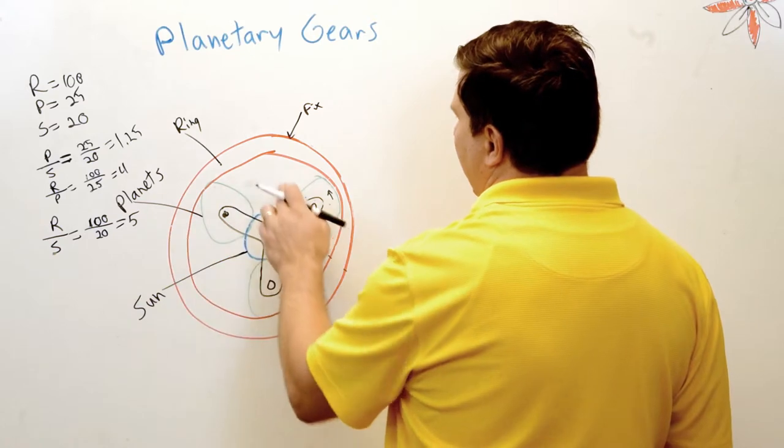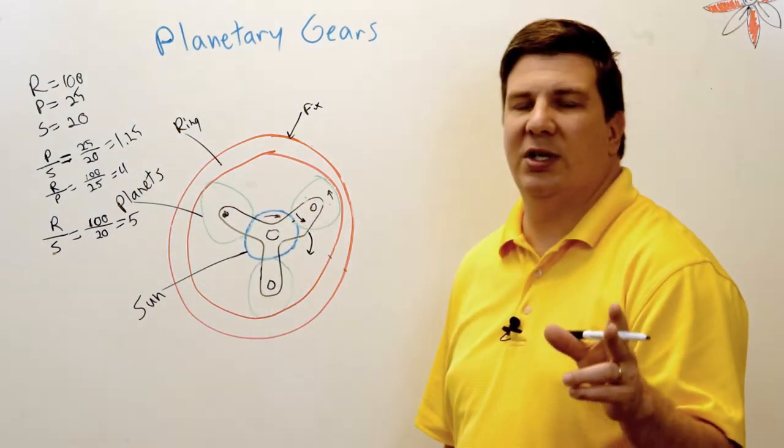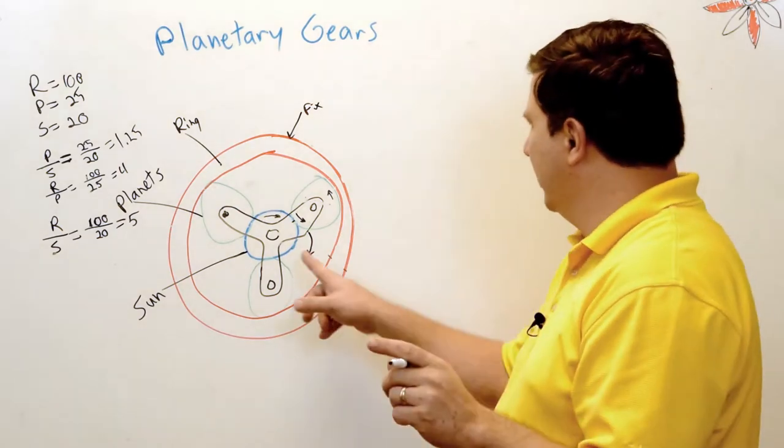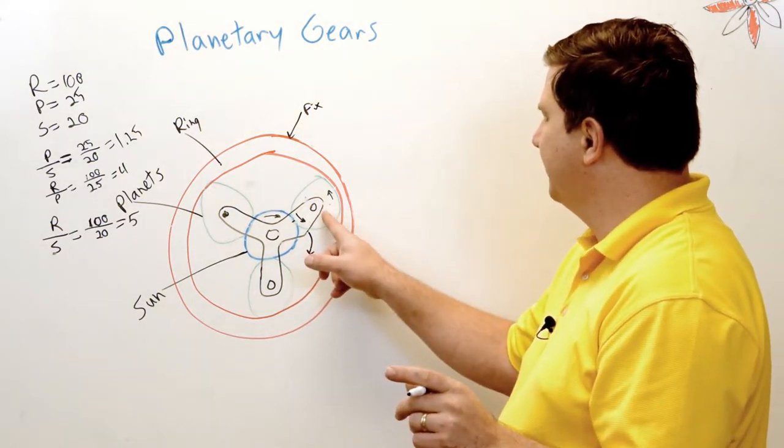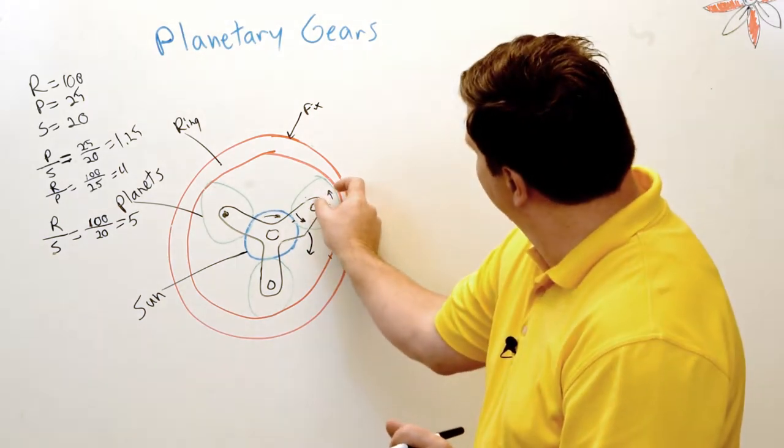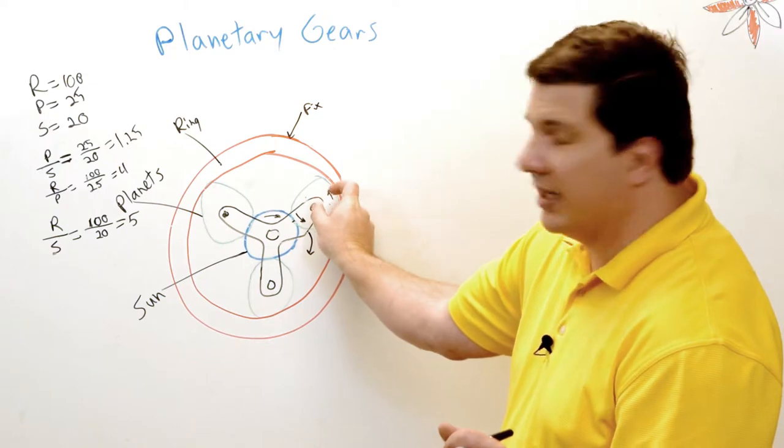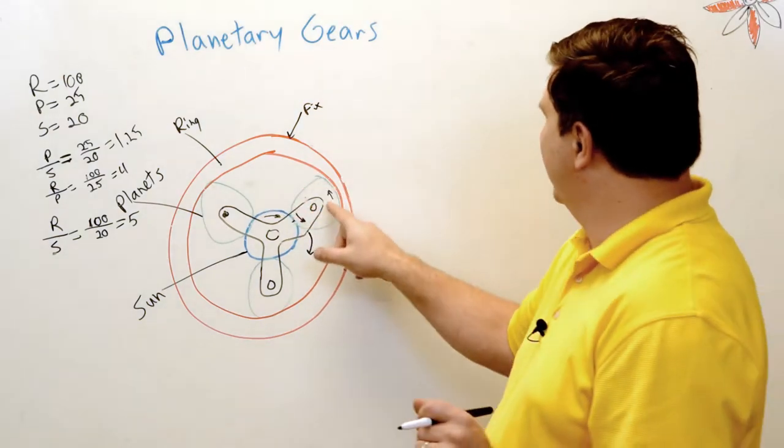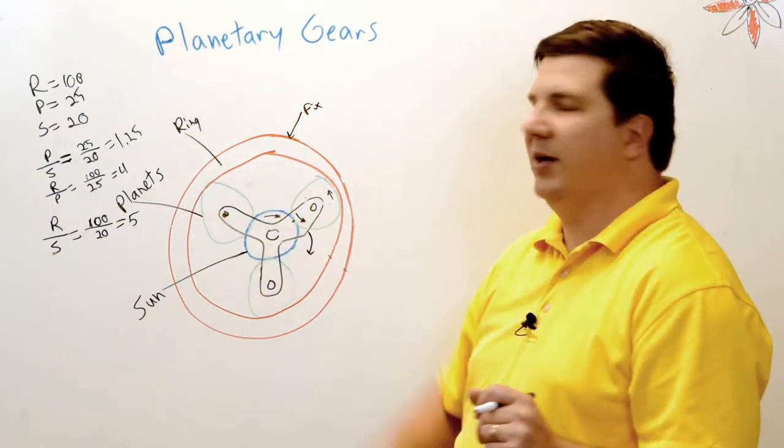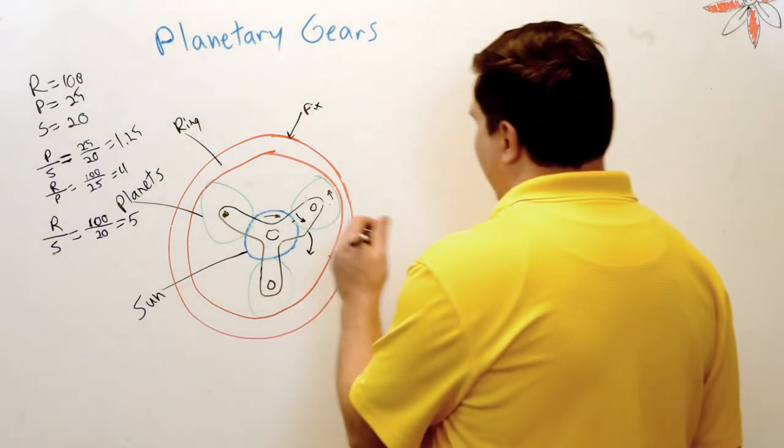And we know by inspection that if that goes around five times, these bigger planets are going to go around four times. But since our stator only moves at half the speed of those planets, right, we only get that much. This is twice the distance, this is the distance.